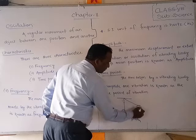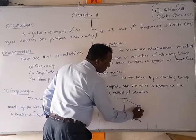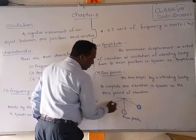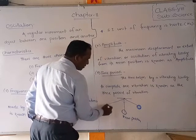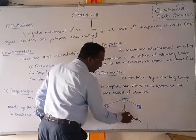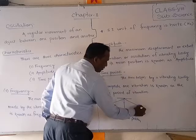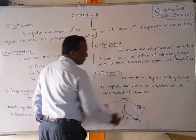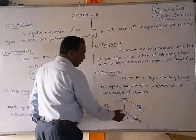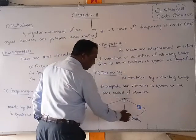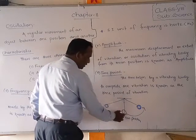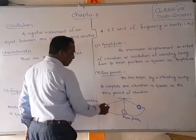When the object moves, it will go up to a maximum position on one side and come down to a minimum on the other side. It will go to the maximum position and then come back. The maximum displacement — how far it can go from the mean position — that is the amplitude.